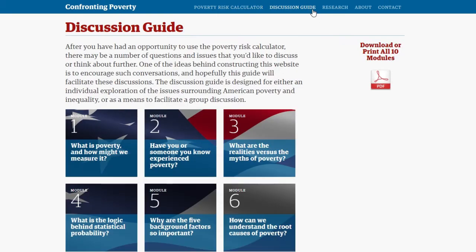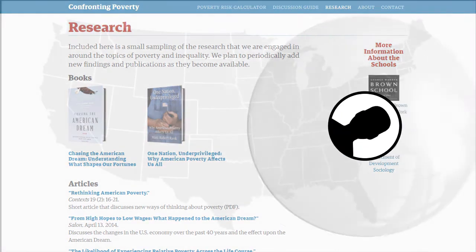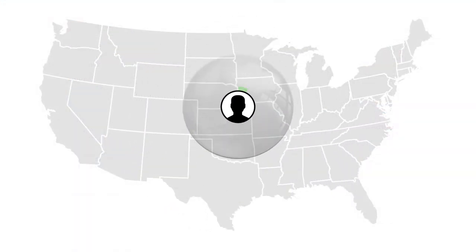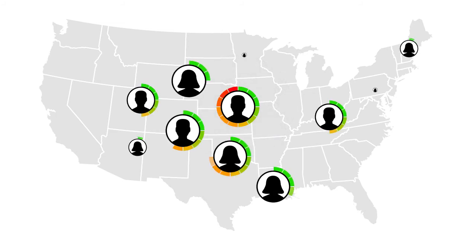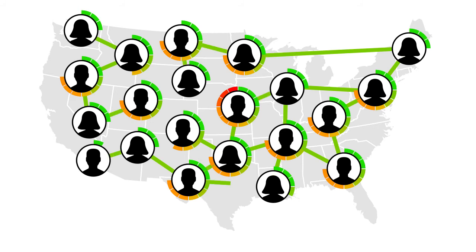Beyond the calculator, there are many other topics on the website that can be explored more deeply around the issues of poverty and inequality. This can start a conversation about your personal chances of poverty, about risks to the community at large, and about what steps we can take to confront it.